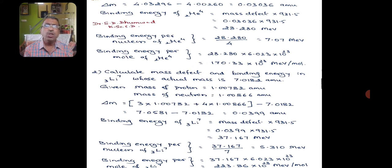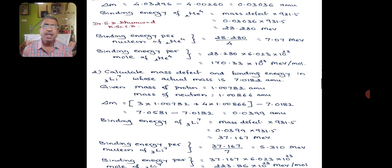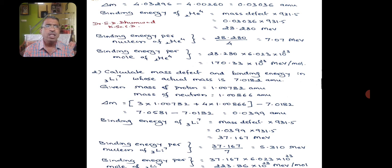Binding energy per nucleon for helium is 28.280 ÷ 4 = 7.07 MeV, since helium contains 2 protons and 2 neutrons giving 4 nucleons. Binding energy per mole of helium nucleus is 28.280 × 6.023 × 10²³ = 170.33 × 10²³ MeV per mole.